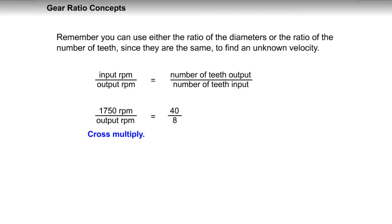Cross multiply. 1750 times 8 equals output RPM times 40. Solve for the output gear RPM. 14,000 over 40 equals 350 RPM.